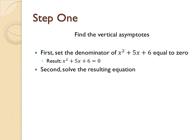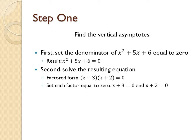Second, we will solve this equation. To do so, we will first factor it, which will result in the factored form (x + 3)(x + 2) = 0. Next, we will set each factor equal to zero. Then, we will solve for x, which tells us that x can be either -3 or -2.